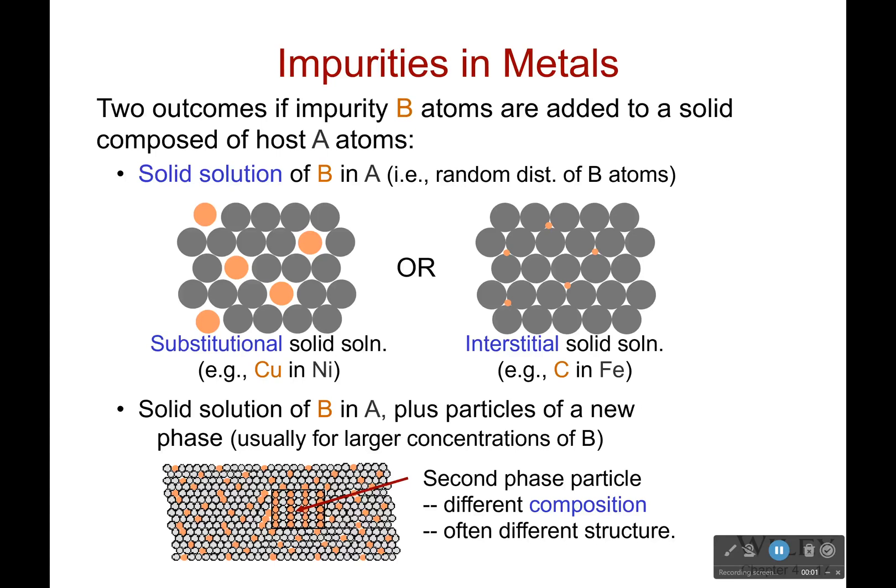Hello everyone. I'd like to talk about another zero-dimensional defect, which is impurities. We were talking about vacancies last time, and we've also talked about self-interstitials where we have an atom that's in a place that's not supposed to be. But what happens when we have different types of atoms in here?